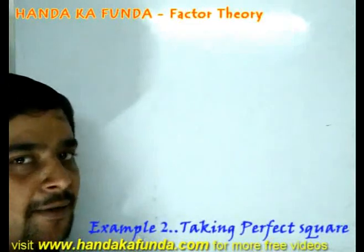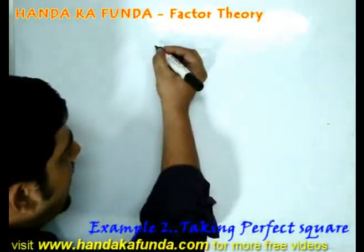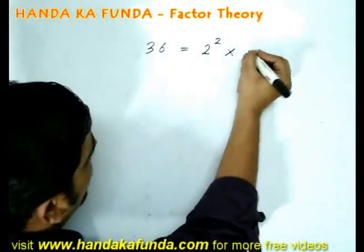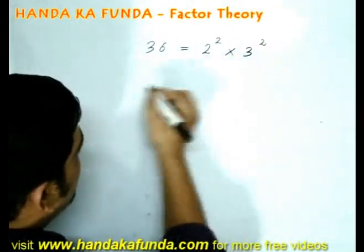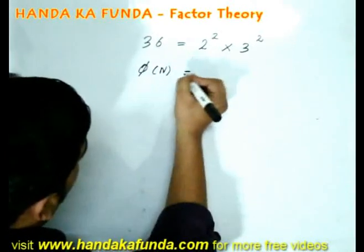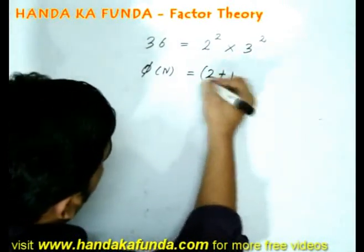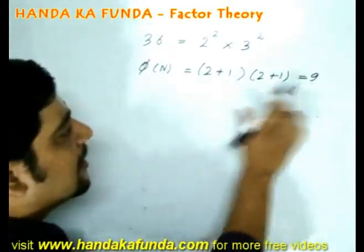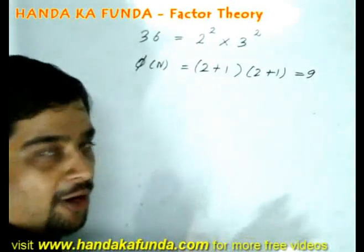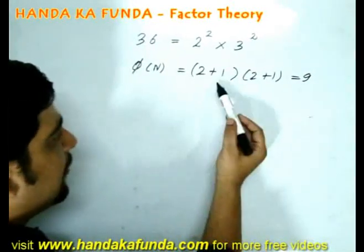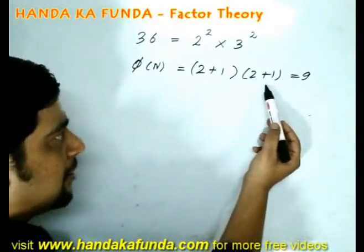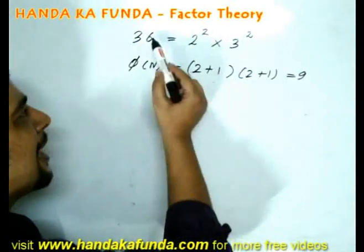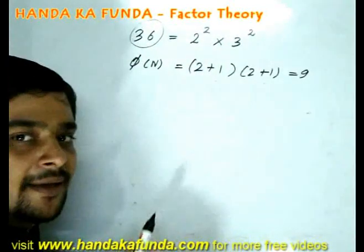Let us take a perfect square for an example. Say, the number is 36. 36 can be written as 2 square into 3 square which means number of factors in this case is 2 plus 1 into 2 plus 1 which is 9. As you can see here, it has emerged that the number of factors are odd. That has happened because 2 plus 1 is odd and 2 plus 1 is odd. That has happened because 2 and 2 are even and that has happened because my number 36 is a perfect square.